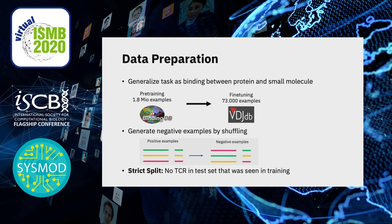Both databases only contain positive examples, so we generate negative examples by shuffling the data — associating T cell receptors with epitopes that they are not associated with in the database. This does not give us true negative data, but the probability that two randomly associated TCR and epitope actually bind is extremely low. We also apply a strict split, meaning that no TCR in the test set was already included in the training set.